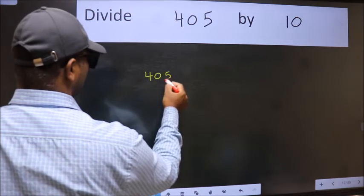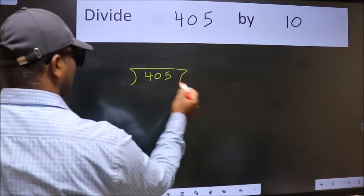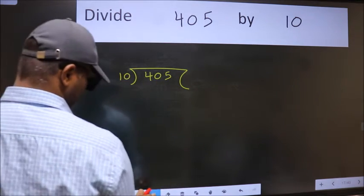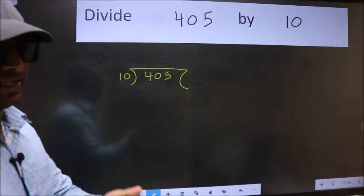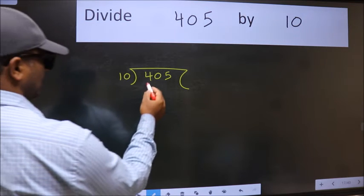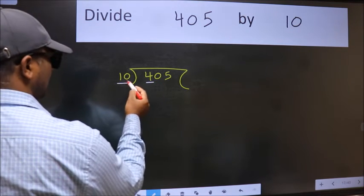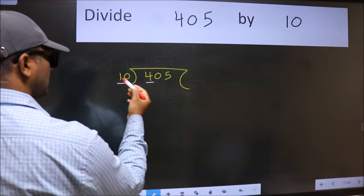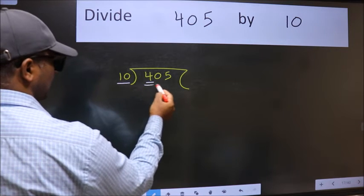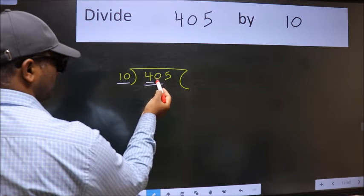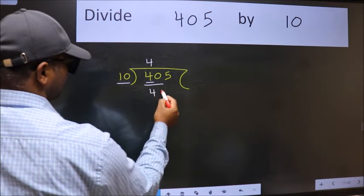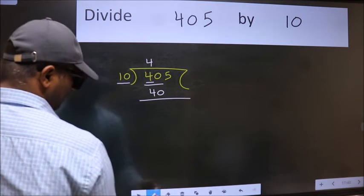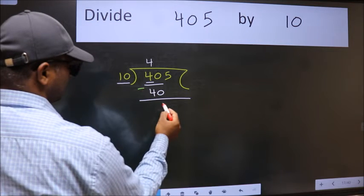405 here, 10 here. This is your step 1. Next, here we have 4 and here 10. 4 is smaller than 10, so take two numbers, 40. When do we get 40 in the 10 table? 10 times 4 is 40. Now we should subtract. We get 0.